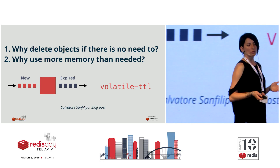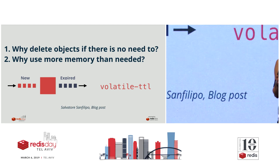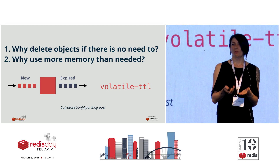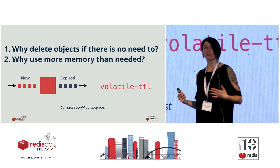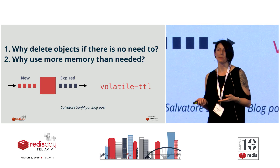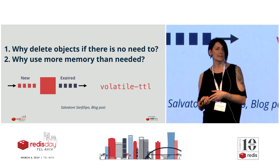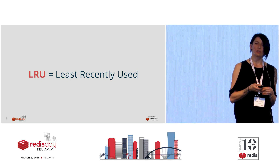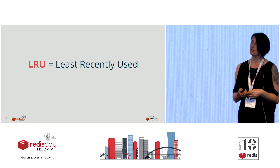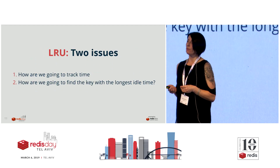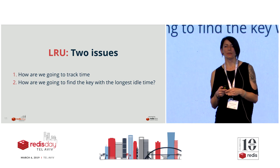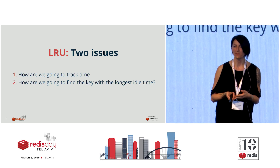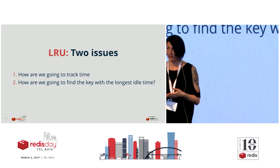But Salvatore asked: is this maybe not the optimal way? Why are we deleting objects if there is no need to? And why are we using more memory if we don't need to? Let's try to look for something better or more optimal. LRU - Least Recently Used - cache eviction policy. It is basically an assumption that if we use a key recently, we are very likely to use it again soon. If we haven't used the key in a long time, we are probably not going to use it soon or ever again.